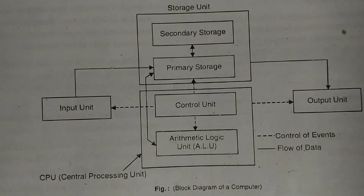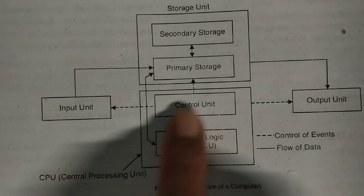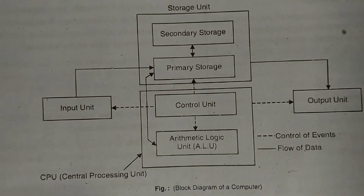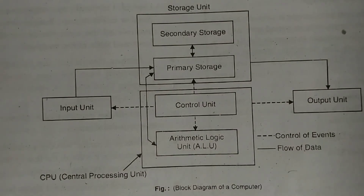This is about the block diagram of a computer. First, write the computer definition, then write about the input unit, then the central processing unit — which contains the storage unit, memory unit, control unit, and arithmetic logical unit together. The storage unit is for storing data. After processing, the data and instructions given are displayed on the output devices.